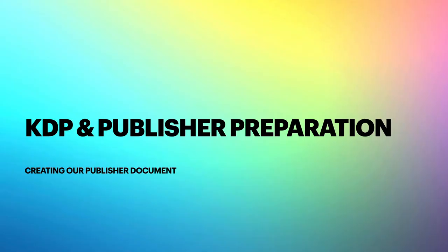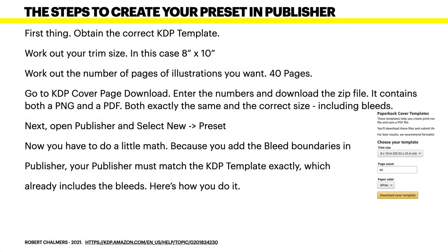KDP and Publisher preparation — creating our Publisher document. The first thing you need to do is obtain the correct KDP template. I've worked out my trim size, which is 8x10 — the trim size being the size of the book once it's finished and on the shelf. For paperback cover templates from KDP: 8x10, 40 page count, paper color white — then download the cover template. Enter the numbers and download the zip file. It's too easy.